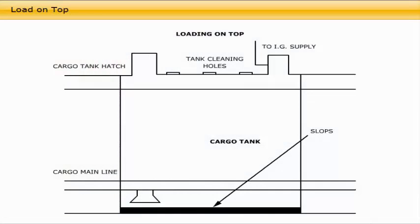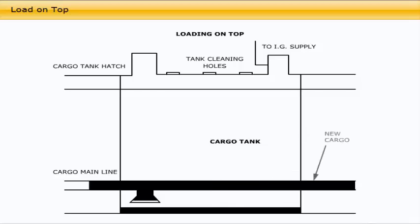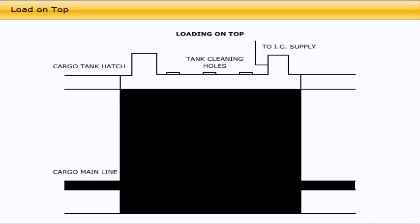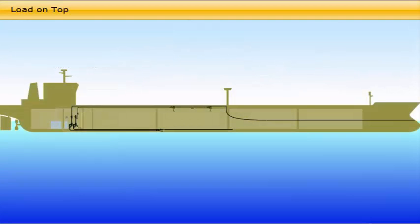Most charter parties provide for the charterer to make the decision regarding the disposition of slops. If the characteristics of the slop oil and the nature of the next cargo permit, the slops may be retained on board and the next cargo loaded on top of them. This is normally done with crude oil cargos when the same or similar crude will be carried on the next voyage. The charterer may wish to load on top, or LOT, in which case full freight will normally be paid. Charterers may require the slops to be discharged; the time required to do this normally constitutes lay time used. If the charterer does not wish to load on top, the slops must be segregated and freight will not be paid to the ship owner on the space or deadweight used.